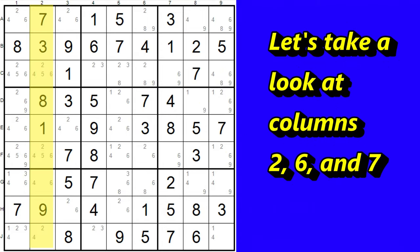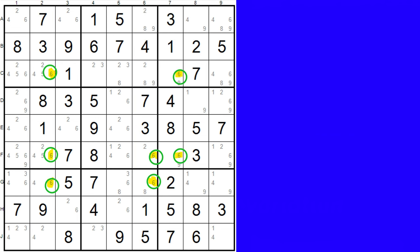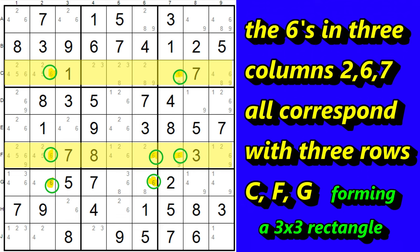This contains a variation of the swordfish pattern going down 3 columns and involving 3 rows. Let's take a look at columns 2, 6, and 7. These 3 columns all have the number 6 matching to the 6s in the 3 rows, rows C, F, and G.